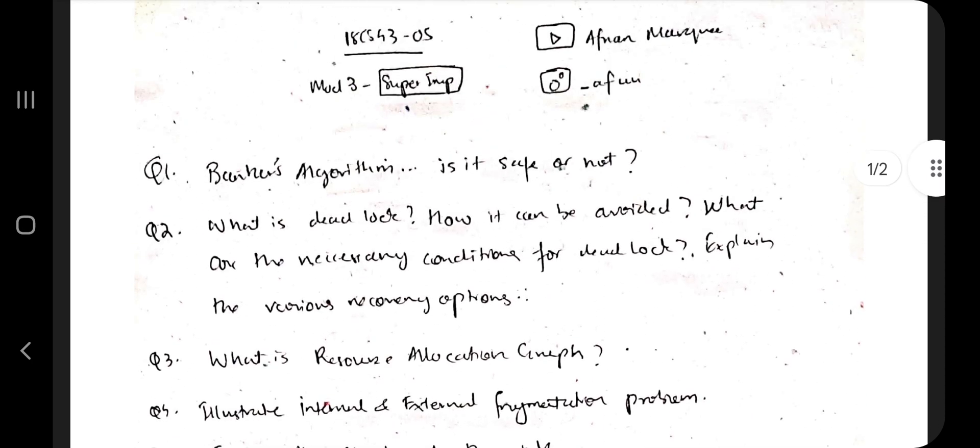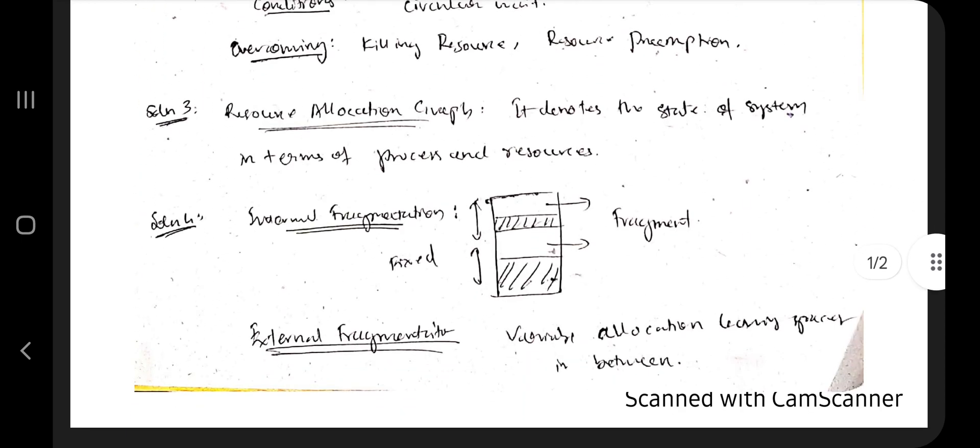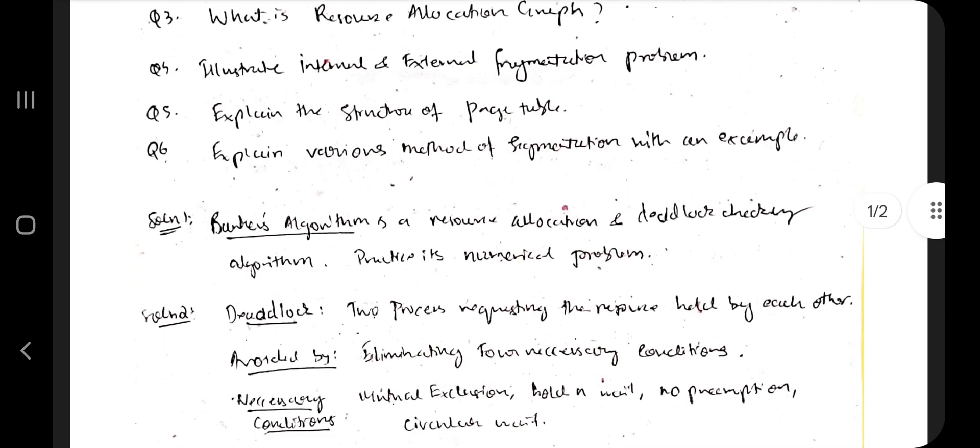What is resource allocation graph? Resource allocation graph denotes the state of system in terms of process and resources. You have to draw a graph and mention its components and explain each point, what's happening and how it works, and what is its significance as well, means the application part.